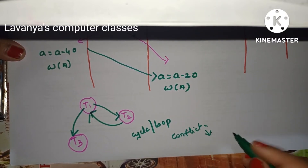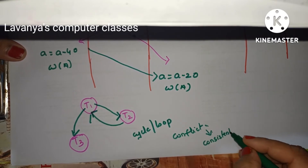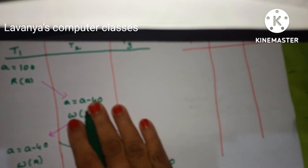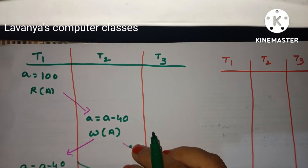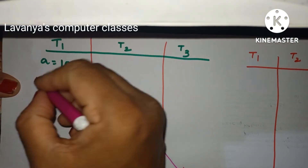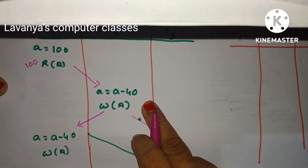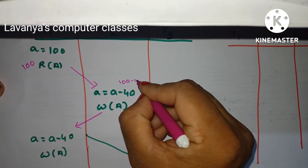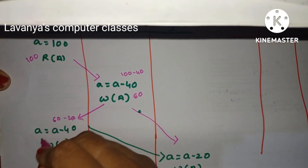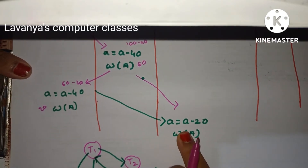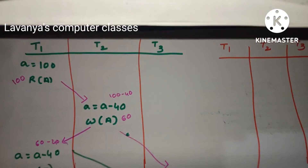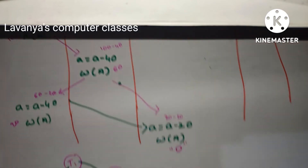Even though it is not conflict serializable, sometimes the result may still be consistent. Let's check: a value is 100. Read a — a is 100. Then a = a − 40, write a — a becomes 60. Coming to the next step: a = a − 40, so 60 − 40 = 20, write a — a is 20. Then a = a − 20, so 20 − 20 = 0, write a. In this non-serial schedule the final answer is 0.